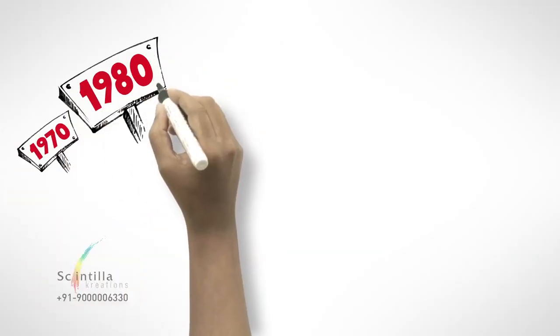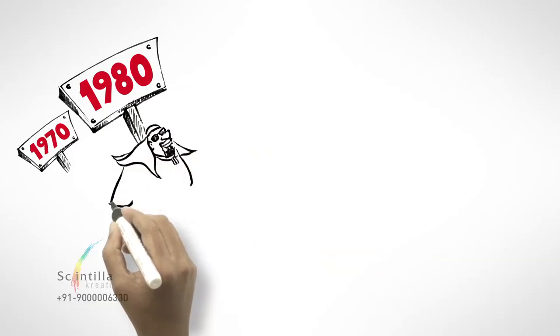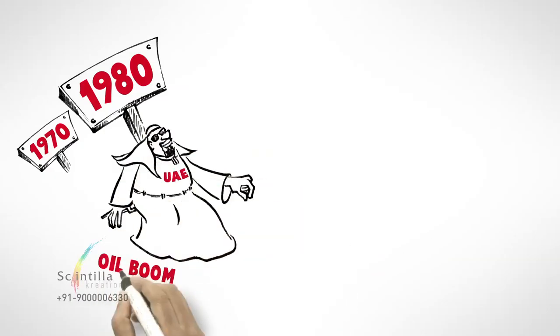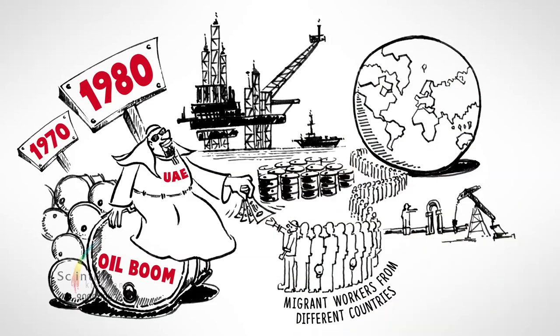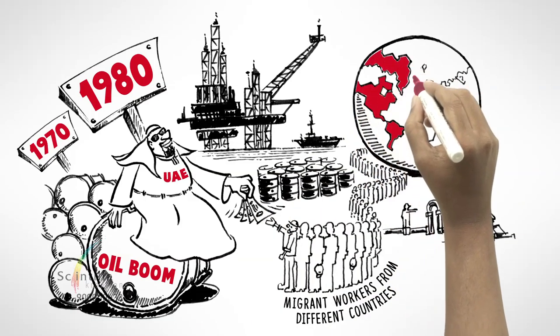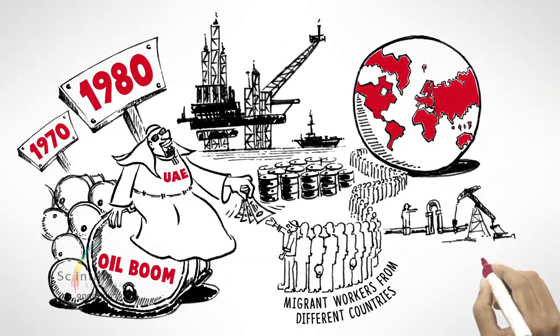Mid 70s to 80s was the period when the UAE's oil industry was actively evolving. Development spurred all around. Migrants flocked in from world over, erasing the borders of the world.